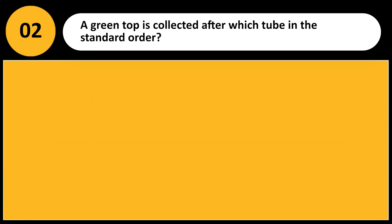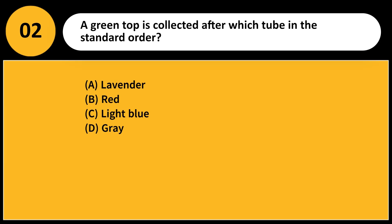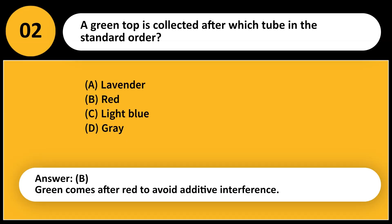A green top is collected after which tube in the standard order of draw? A. Lavender. B. Red. C. Light blue. D. Gray. Answer: B. Green comes after red to avoid additive interference.